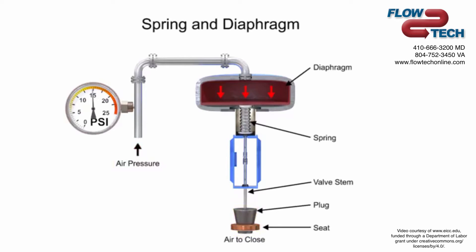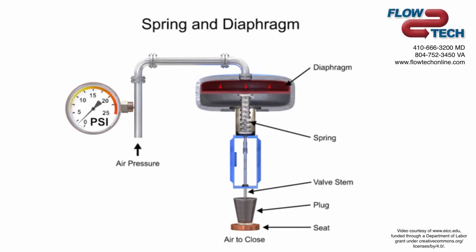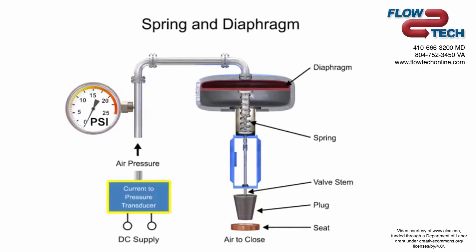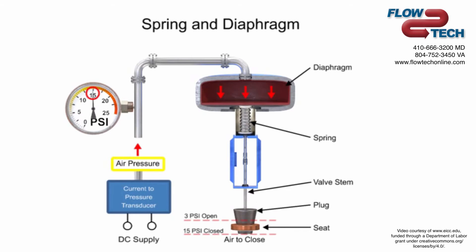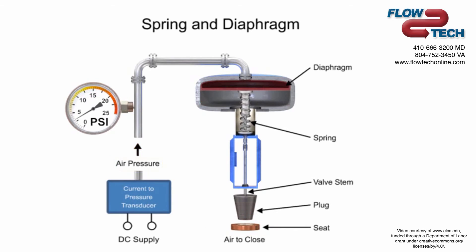With no air pressure, the restrictor is pushed upward by the spring to act as a normally open control valve. To vary the position of the restrictor and flow through the valve, a current to pressure transducer can be used to provide a 3 to 15 PSI signal to the diaphragm. At 3 PSI the valve is maintained open, and at 15 PSI the valve is maintained closed. Pressures between the 3 to 15 PSI range proportionally change the flow of the valve.